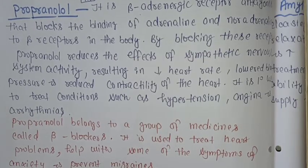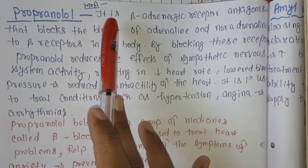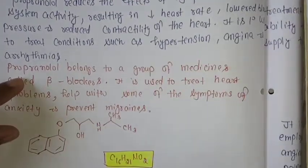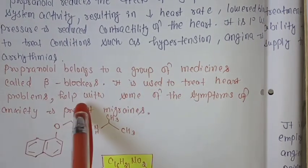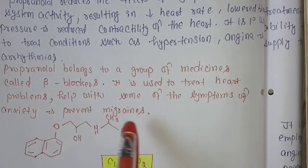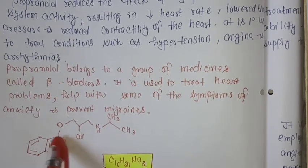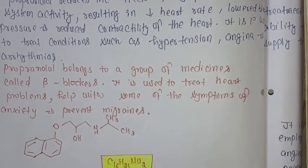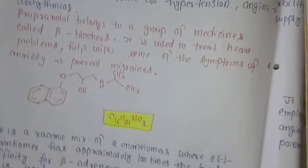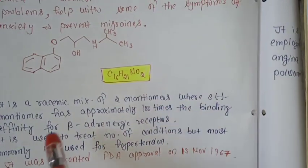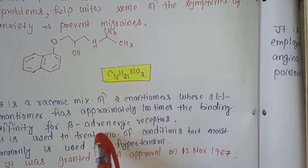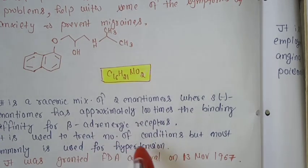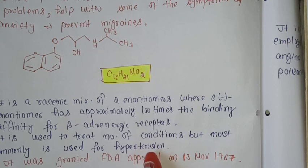The second drug is propranolol. It belongs to a group of medicines called beta blockers, and is used to treat heart problems, help with some symptoms of anxiety, and prevent migraines. Its molecular formula is C16H21NO2. It is a racemic mixture of two enantiomers; the S-negative enantiomer has approximately 100 times the binding affinity for beta-adrenergic receptors. It was granted FDA approval on 13 November 1967.